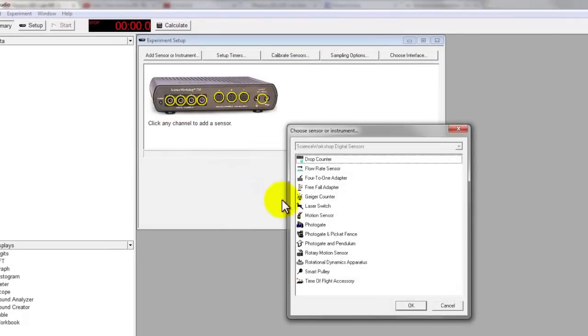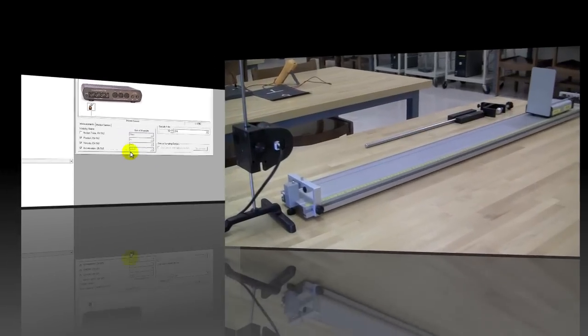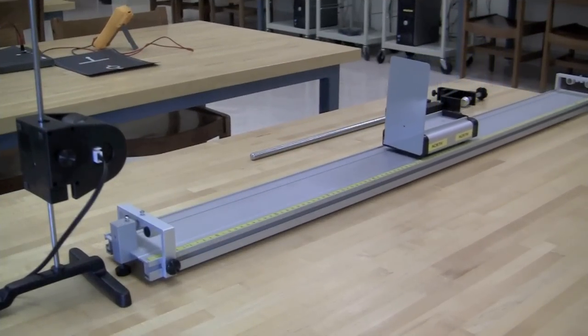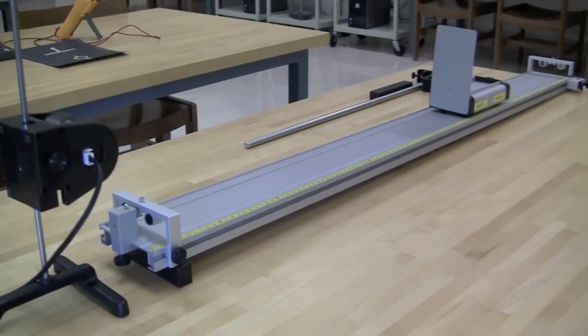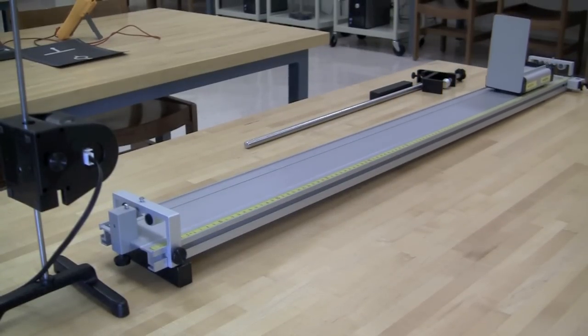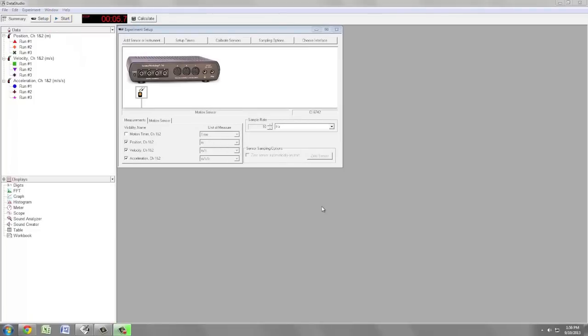Once again, open up Data Studio and create a new experiment. This time select your instrument as motion sensor. Take different kinds of runs that are described in the lab manual. You can once again generate graphs, histograms and data tables for position, velocity and acceleration.